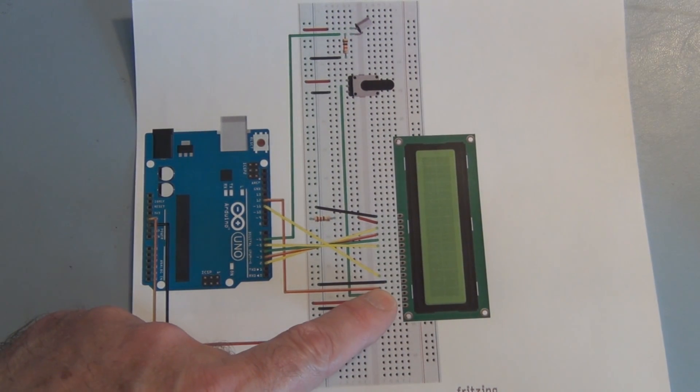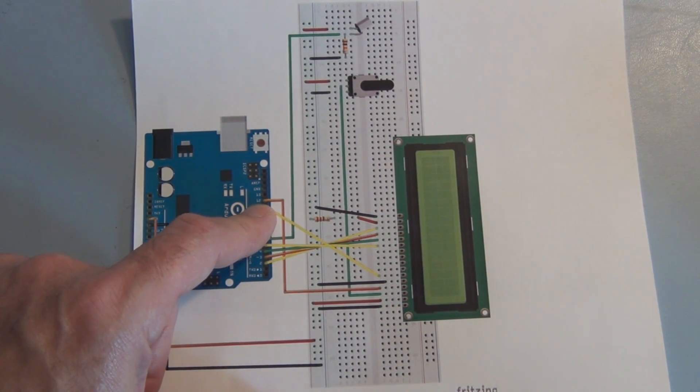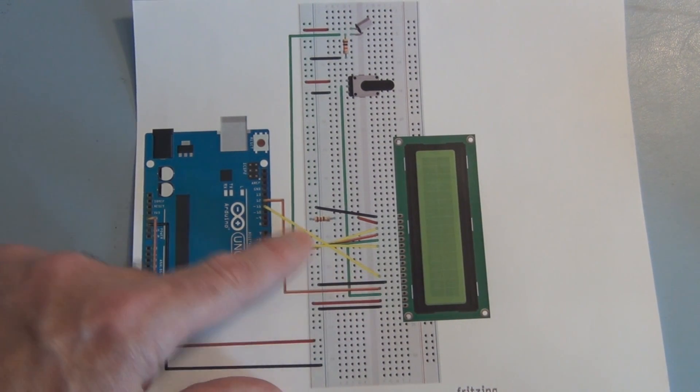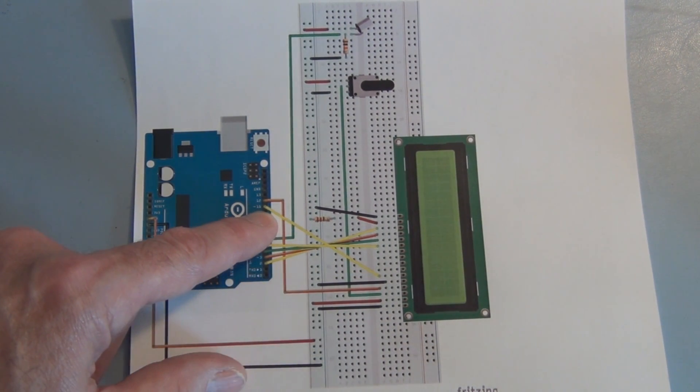Pin 4 is register select and that's connected to pin 12 on the Arduino. That's going to be an output. Pin 6 is the enable pin and that gets connected to pin 11. And that will be an output on the Arduino.